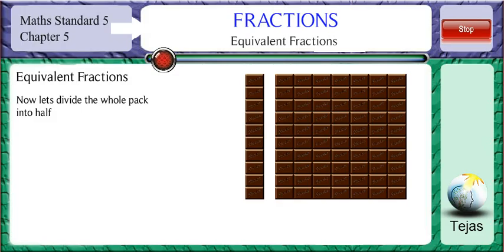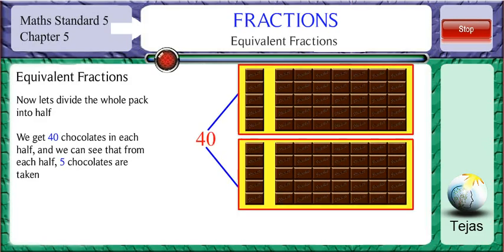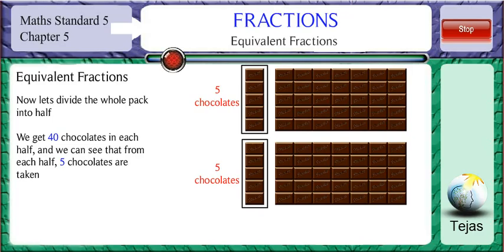Now let's divide the whole pack into half. We get 40 chocolates in each half, and we can see that from each half, 5 chocolates are taken.